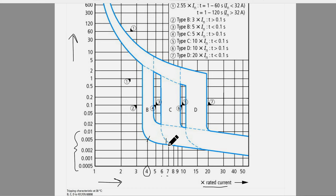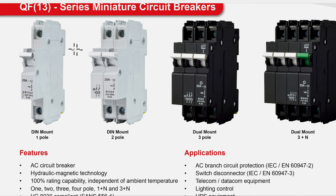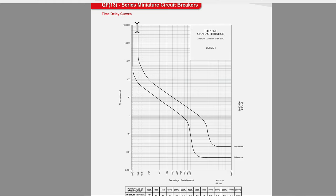Going back to the tripping curves, six or seven times the rated capacity of a circuit breaker is only 70 amps. But recall that it's very easy to quickly get a theoretical inrush current of 300 amps. That is why it is so important to look at these tripping curves and select the correct tripping curve for our loads.